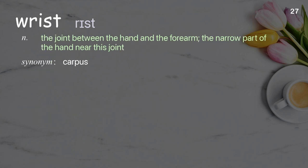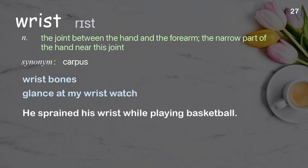Wrist: The joint between the hand and the forearm; the narrow part of the hand near this joint. Examples: Wrist bones. Glance at my wristwatch. He sprained his wrist while playing basketball.